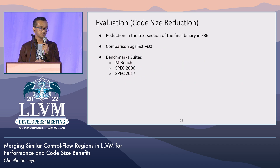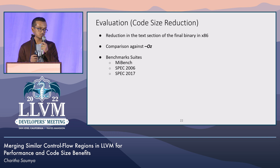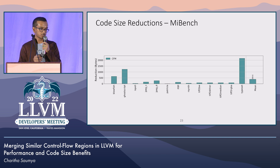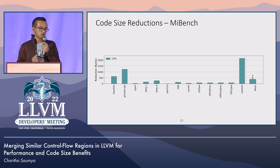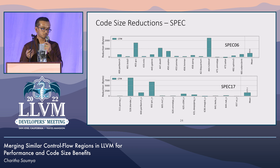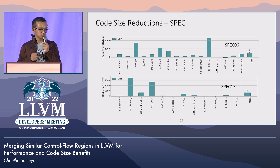For the CPU code size reduction application, we measured the reduction in the text section of the final binary on x86, comparing against the Oz optimization level. We use three benchmark suites: MiBench, SPEC 2006, and SPEC 2017. The code size reductions were modest for MiBench, but we found several cases where CFM can reduce code size significantly. The observation is similar for SPEC benchmarks. However, we believe this is useful because the compile-time overhead is limited and can be improved, and there were no significant performance regressions from the transformation.